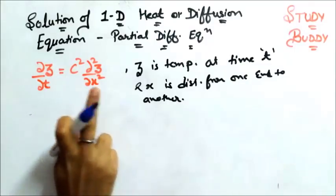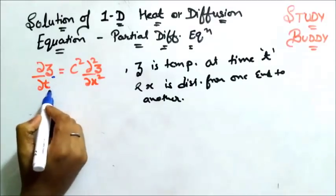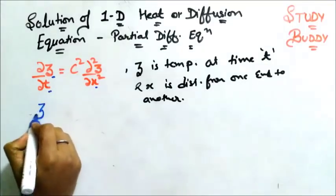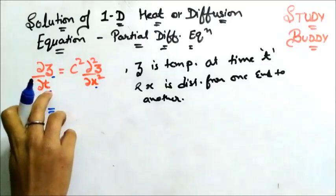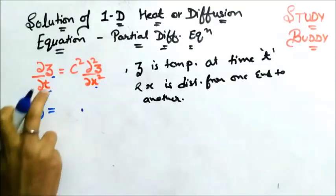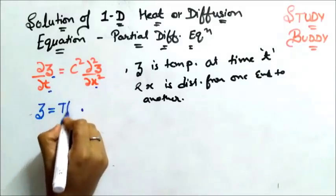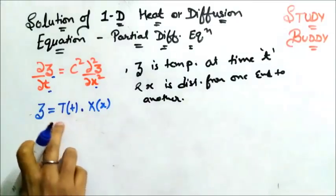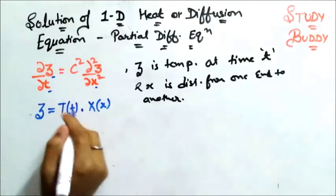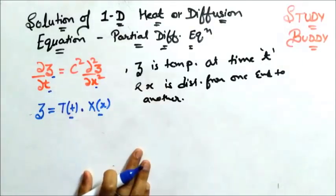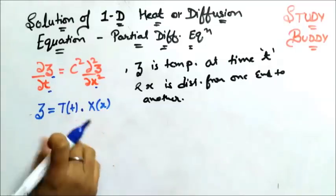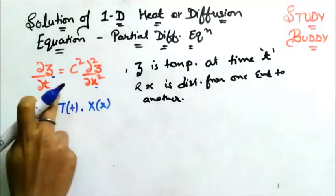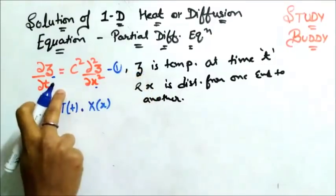Now I'll start with the method of separation of variables. The method says that to solve this partial differential equation — where we have Z, T, and X — Z will be written as a multiplication of T and X. In this equation I just need to find T and X according to the method of separation of variables. First I need to find del Z by del T.